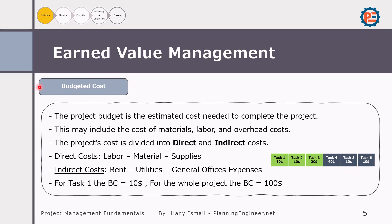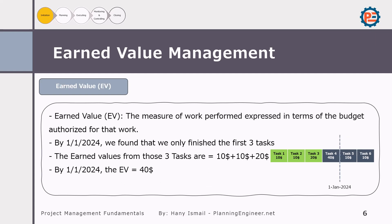Now we'll talk about Earned Value. Earned Value measures the work performed in terms of the budget authorized for that work. For example, by the first of January, let's assume we finished three tasks. So the Earned Value will be 10 plus 10 plus 20. We only completed those tasks — according to the baseline schedule we should have completed one more, but Earned Value only counts tasks or activities already completed. So Earned Value here equals 40 dollars, which comes from 20 plus 10 plus 10.